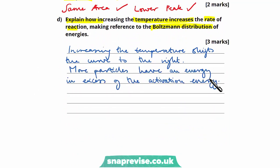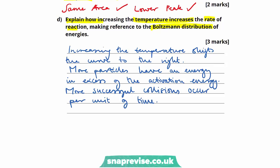As a result of more particles having an energy in excess of the activation energy, more successful collisions occur per unit of time. This question holds three marks: first for explaining that increasing temperature shifts the curve to the right; second that more particles exceed the activation energy; and third that more successful collisions occur per unit of time, increasing the rate of reaction.